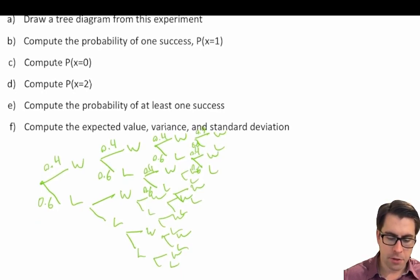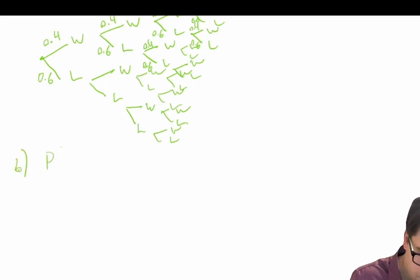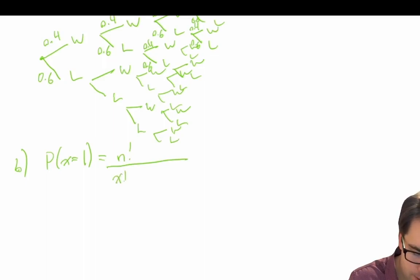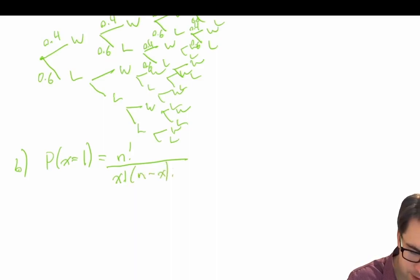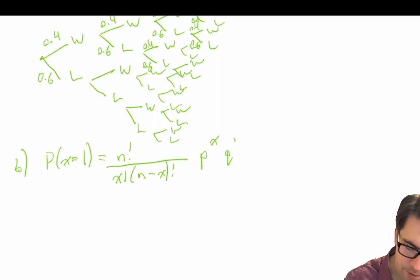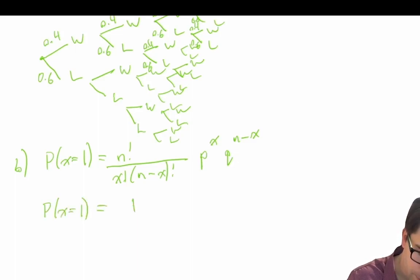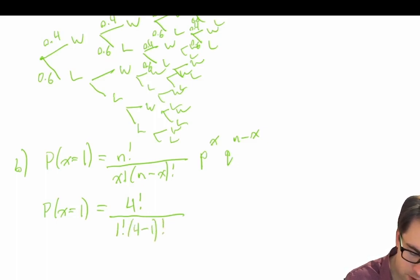Compute the probability of exactly one success. P(X = 1) equals n factorial divided by x factorial times (n minus x) factorial, times the probability of success to the power of the number of successes, times the probability of failure to the power of (n minus x). So P(X = 1) equals 4 factorial divided by 1 factorial times (4 minus 1) factorial, times 0.4 to the power of 1, times 0.6 to the power of (4 minus 1).